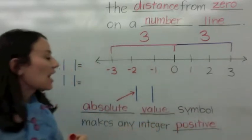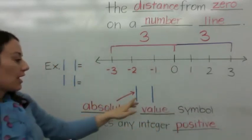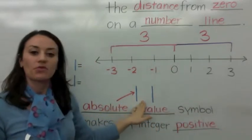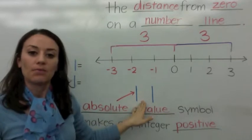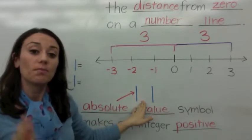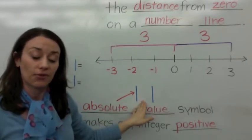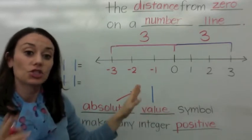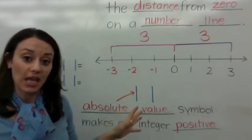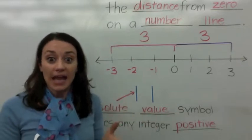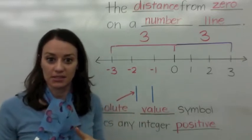So when you see an integer in the absolute value symbol, it's going to make it positive, because there is no such thing as negative distance.